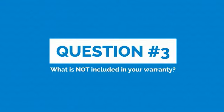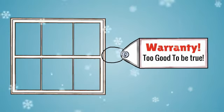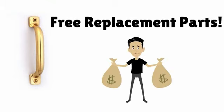Question number three, what is not included in your warranty? Some windows come with a too-good-to-be-true warranty that really only covers the basics. For example, if your handle broke on your new window, some warranties will send replacement parts, but you pay the shipping and the labor.